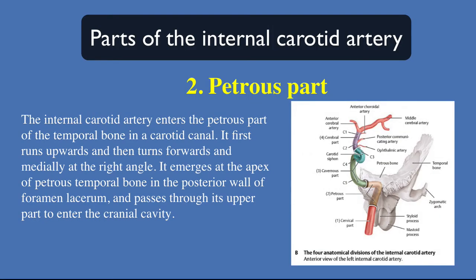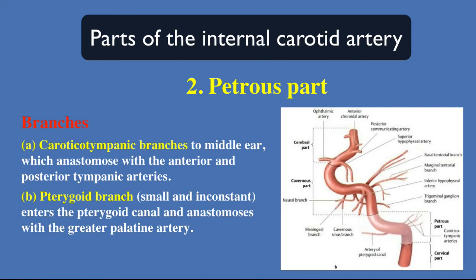The second part of the internal carotid artery: the petrous part. The internal carotid artery enters the petrous part of the temporal bone in the carotid canal. It first runs upward and then turns forward at a right angle. It emerges at the apex of the petrous temporal bone in the posterior of the foramen lacerum, and passes through its upper part to enter the cranial cavity. Branches of the petrous part: first branch, caroticotympanic branch to the middle ear, which anastomoses with the anterior and posterior tympanic arteries; and pterygoid branch, small and inconstant, enters the pterygoid canal and anastomoses with the greater palatine artery.